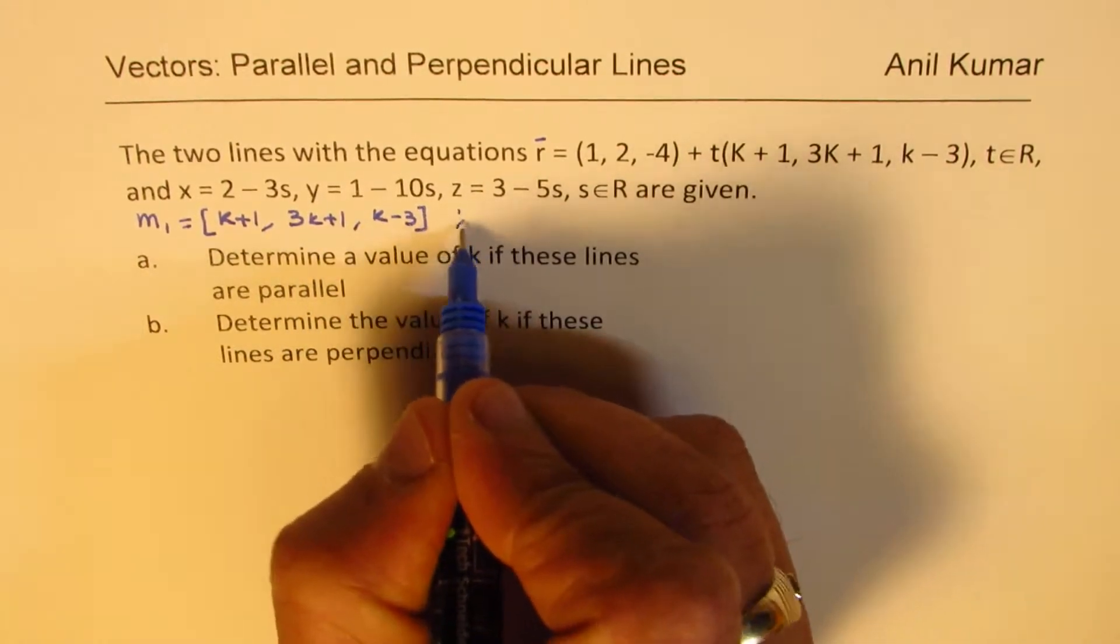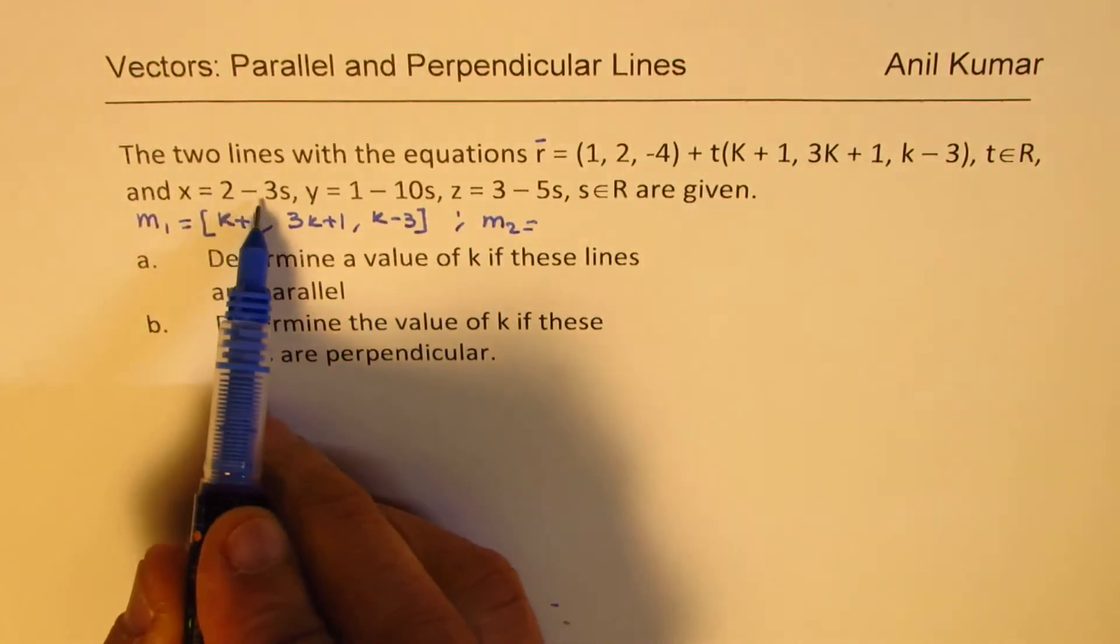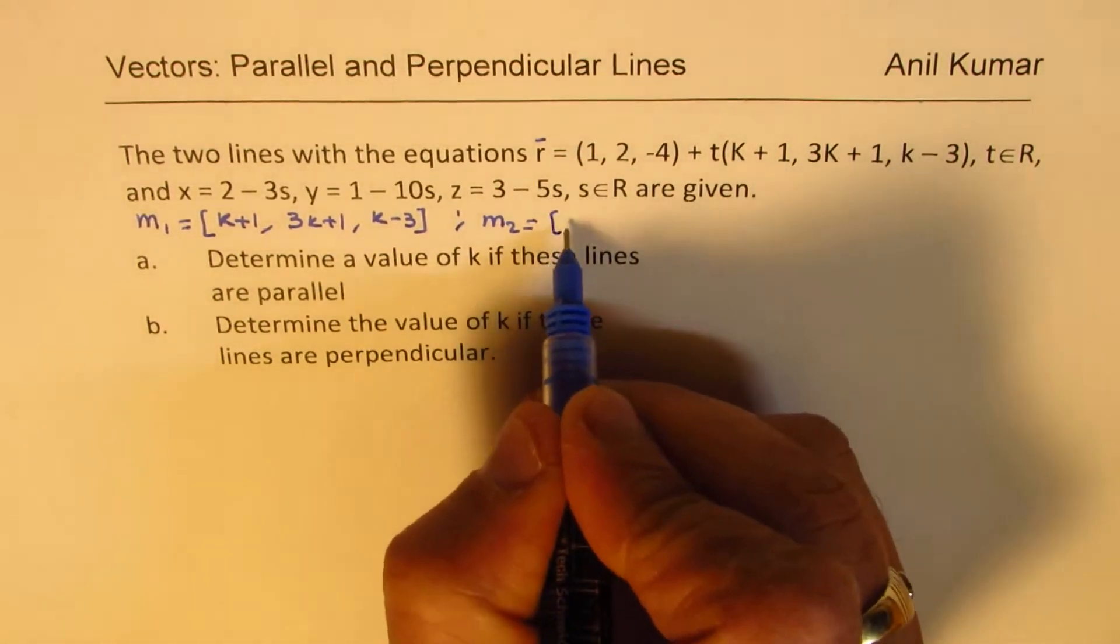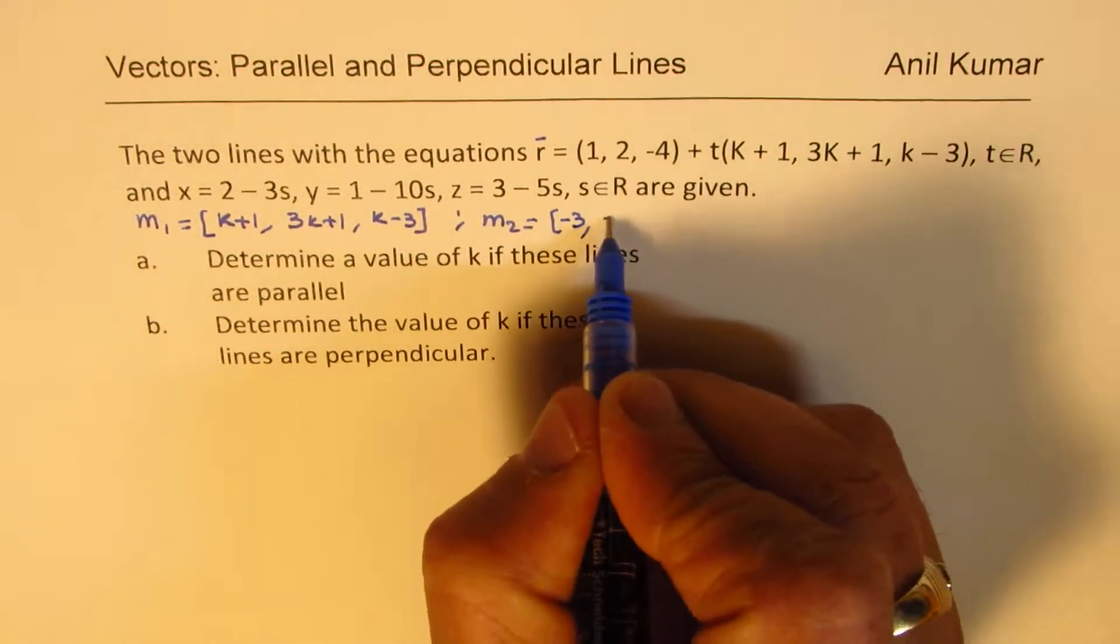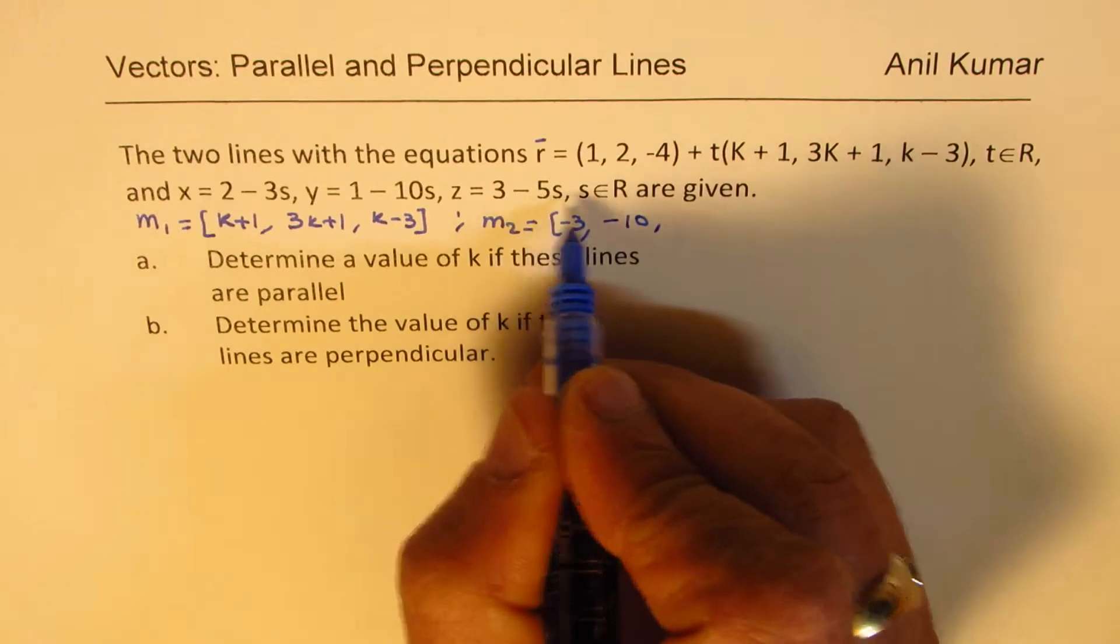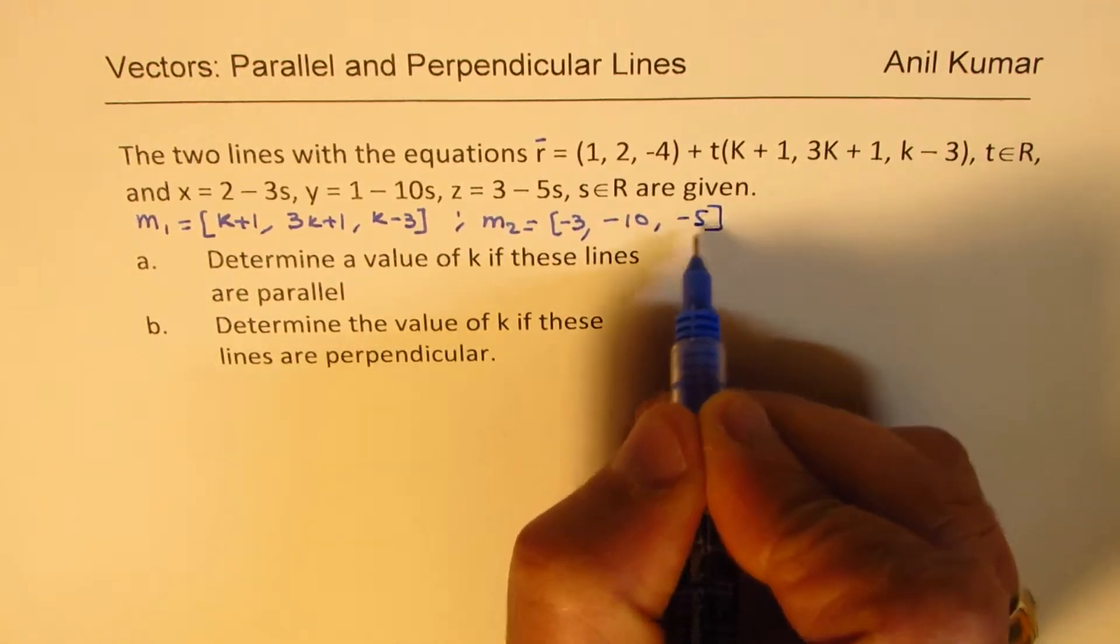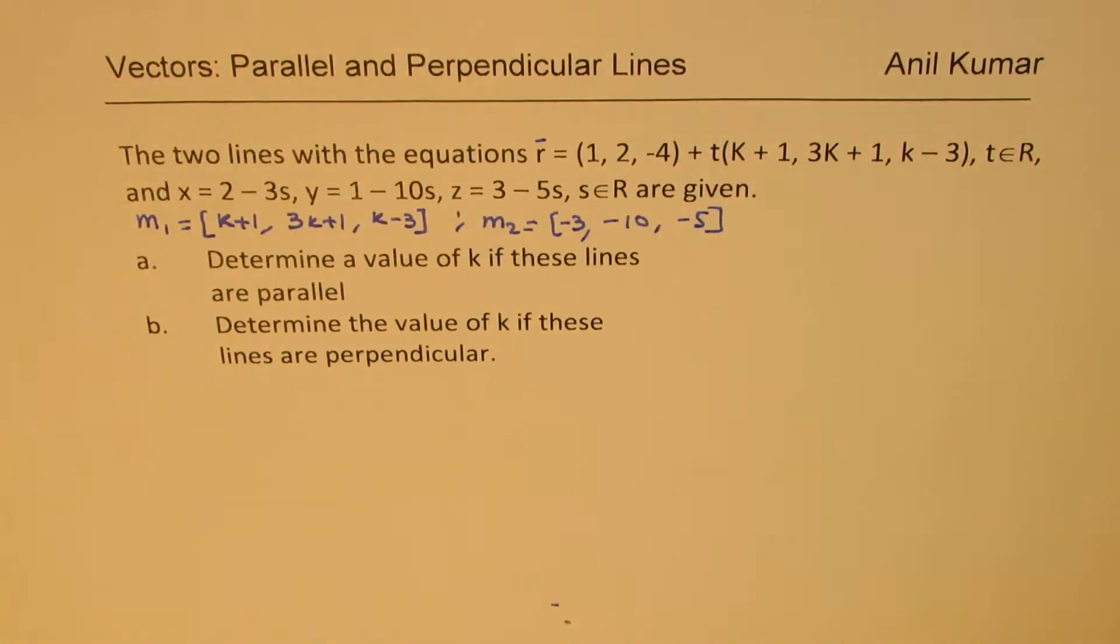For the second line, the direction vectors are (-3, -10, -5). So these are the two direction vectors.